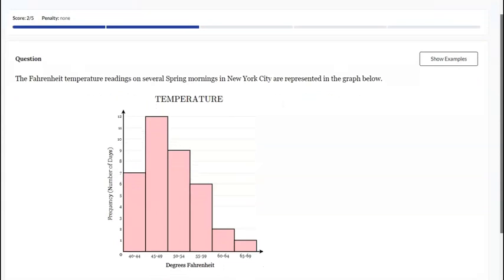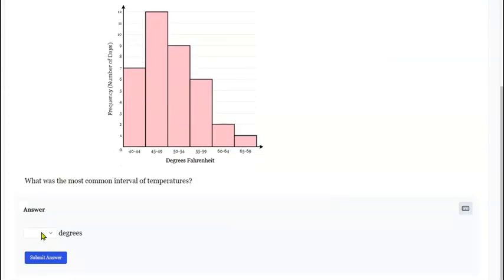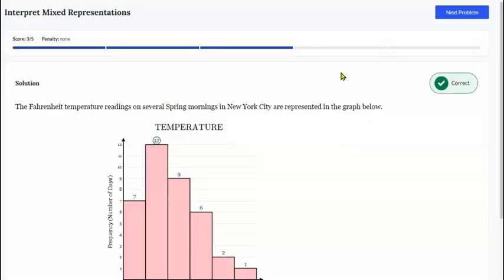Next question here asks us to determine the most common interval of temperature. So that would be the interval with the highest bar which would be 12 here and so that interval is 45 to 49. Choose that from the drop down menu and select yes.